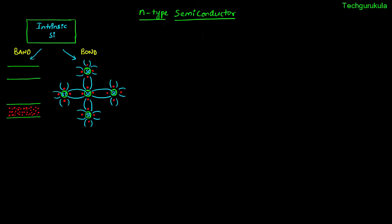I am taking an intrinsic silicon which is represented by its bond and band model as shown here. This is at T equals to 0 Kelvin where the valence band is completely filled with the valence electrons and the conduction band is completely empty. From the bond model perspective, all the bonds are intact.